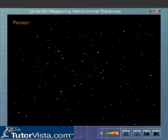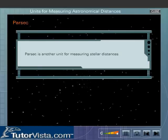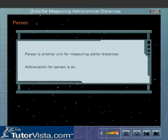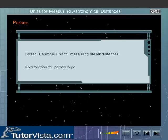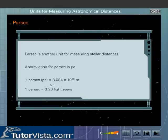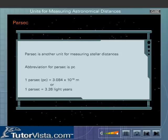Parsec. Parsec is another unit for measuring stellar distances. Abbreviation for Parsec is P.C. One parsec is equal to 3.084 into 10 to the power 16 metres, or one parsec is equal to 3.26 lightyears.